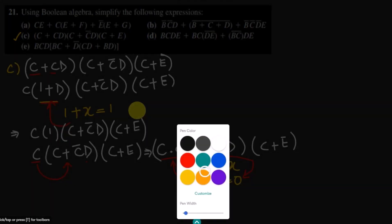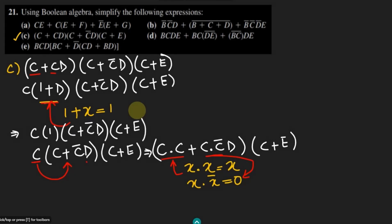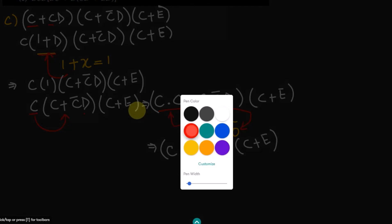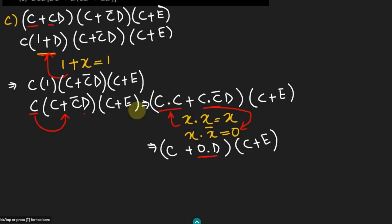What I will get here: I will get C, and also here I will get 0 dot D, and here we will have C plus E. Now this will also become 0, and 0 plus C will also give me this C, and here I will have C plus E.